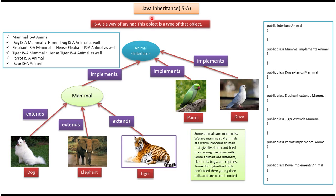Hi, in this video tutorial I will cover Java Inheritance Is-A Relationship. Is-A is a way of saying this object is a type of that object.